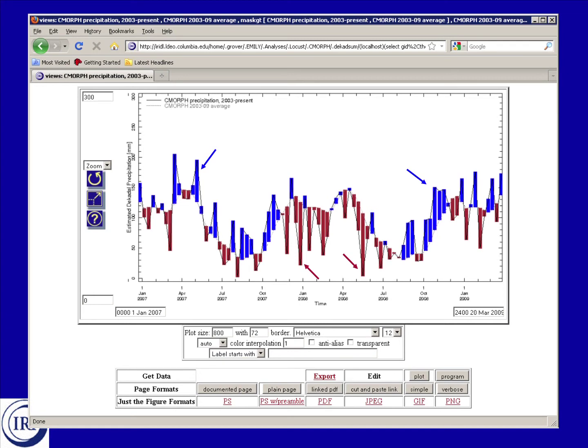You'll see on the plot that the black line shows the total precipitation, and there's also a gray line that shows the precipitation climatology, in this case the average over 2003 to 2009. Areas in blue show where the total precipitation is above the multiple year average, and areas in red are where the precipitation was below the long term average. For instance, these periods in 2008 were generally below the long term average, and these locations were above the average.